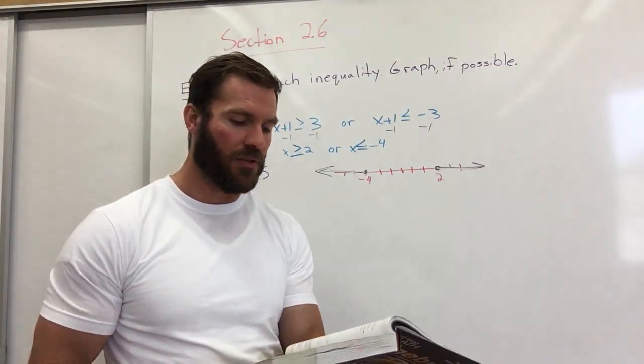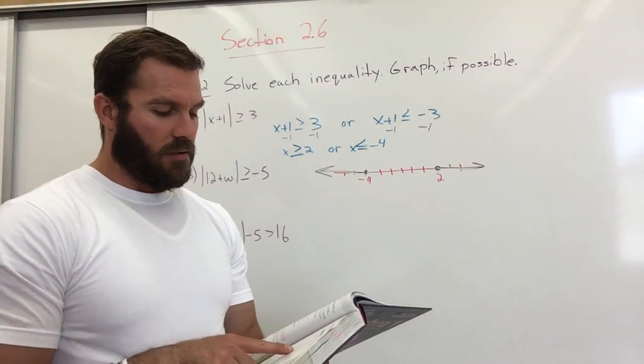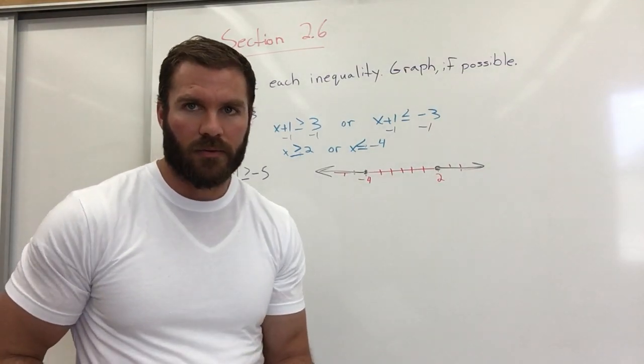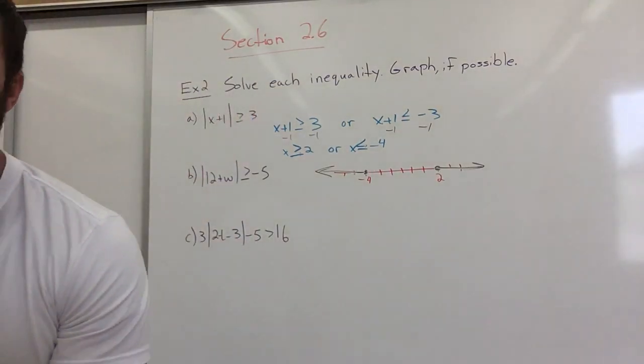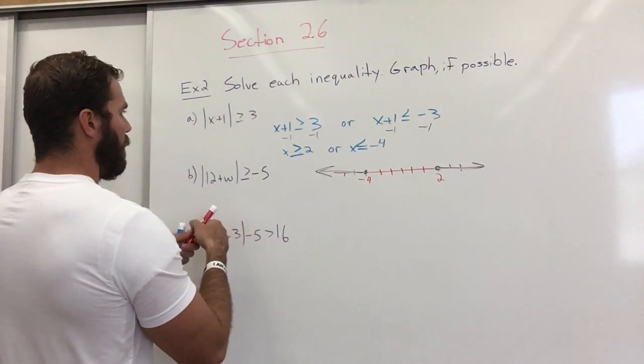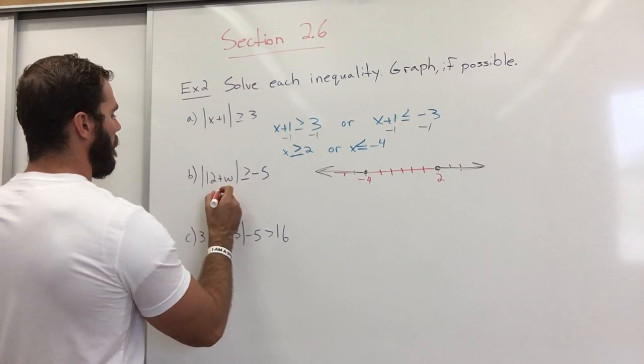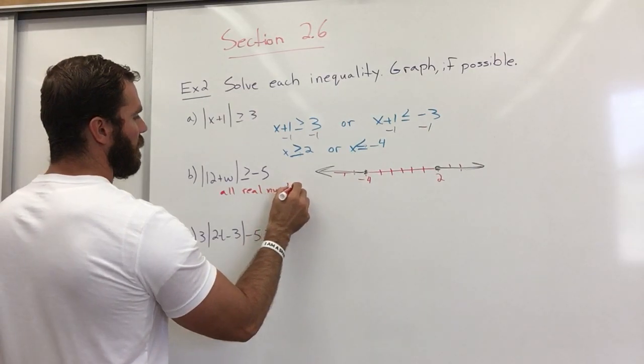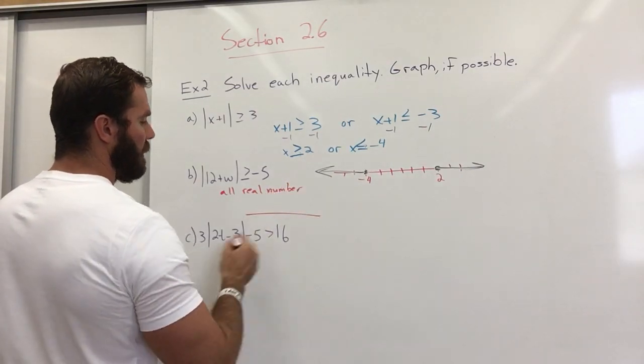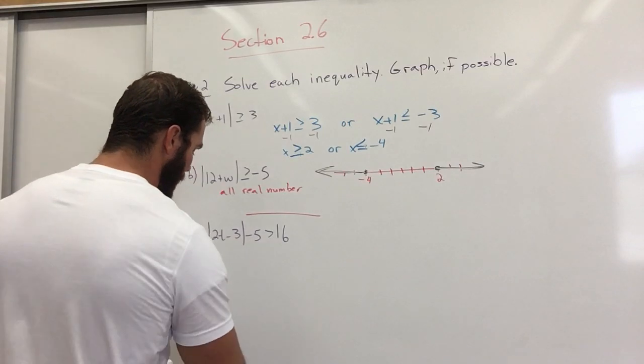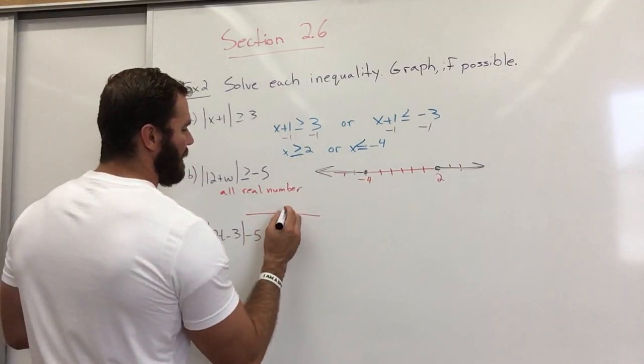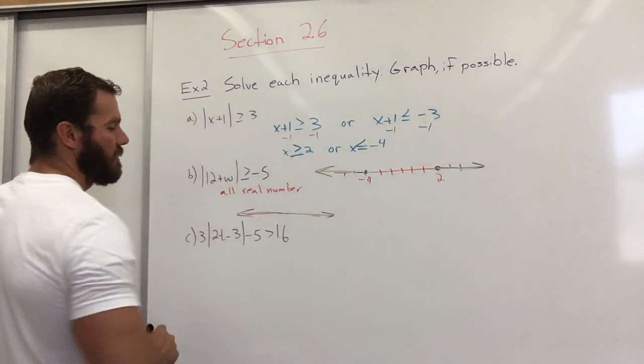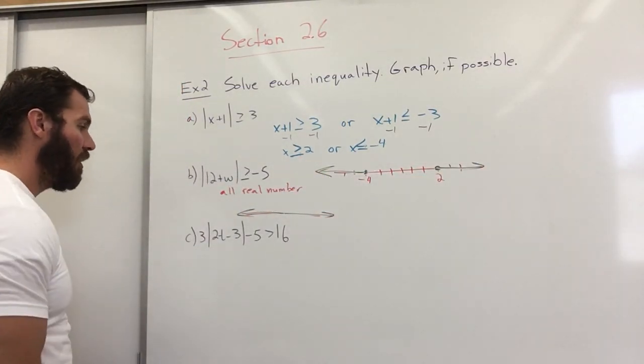Okay, so because no matter what you put in, it's going to be greater than negative 5. So those are kind of like an easy one, that's kind of like a given. It's all reals, all real numbers. And your graph, it's basically just an arrow and it's just forever. The whole thing is an arrow.